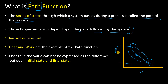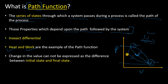Those properties which depend upon the path followed by the system are called path functions. Heat and work are the examples of path function. In the case of a state function like internal energy, it does not depend on the path — whether you go from one to two via this direction or that path, it makes no effect on internal energy. But in the case of heat and work, it will definitely be affected. If you take a longer path, the work done will be more compared to a shorter path. That's why heat and work are path functions, not state functions.